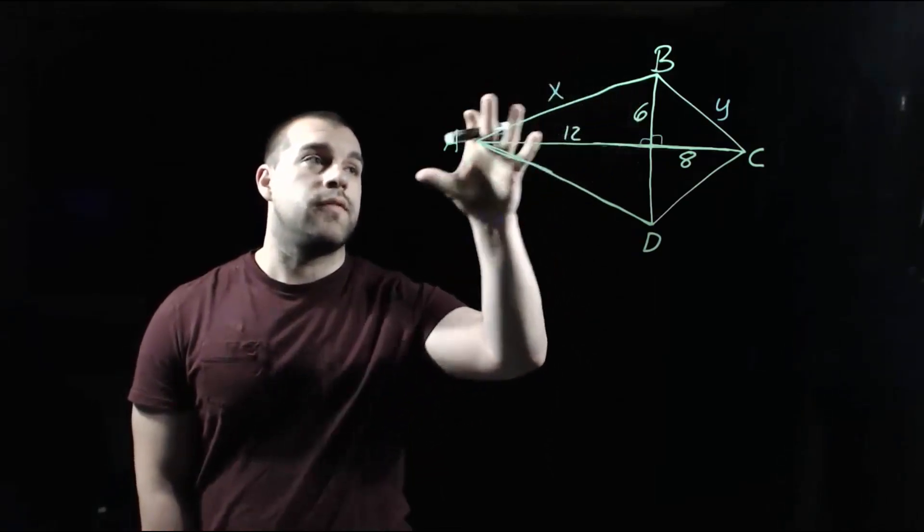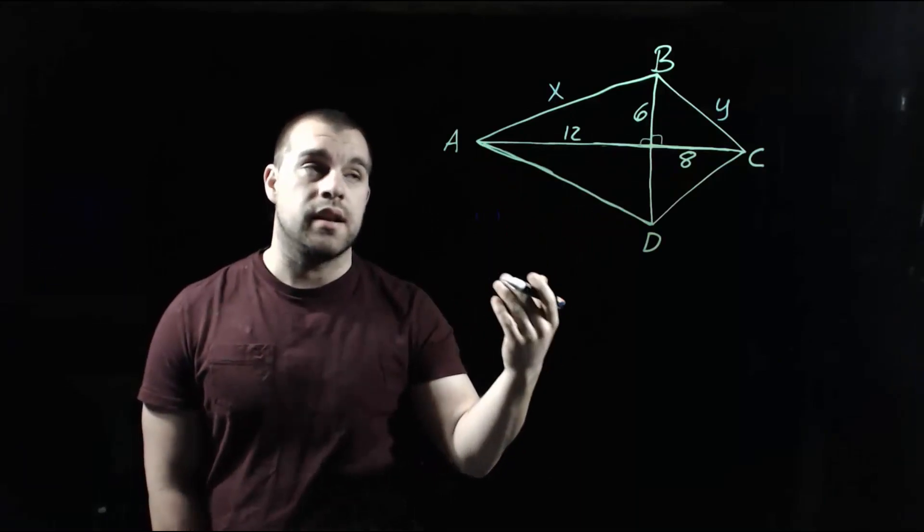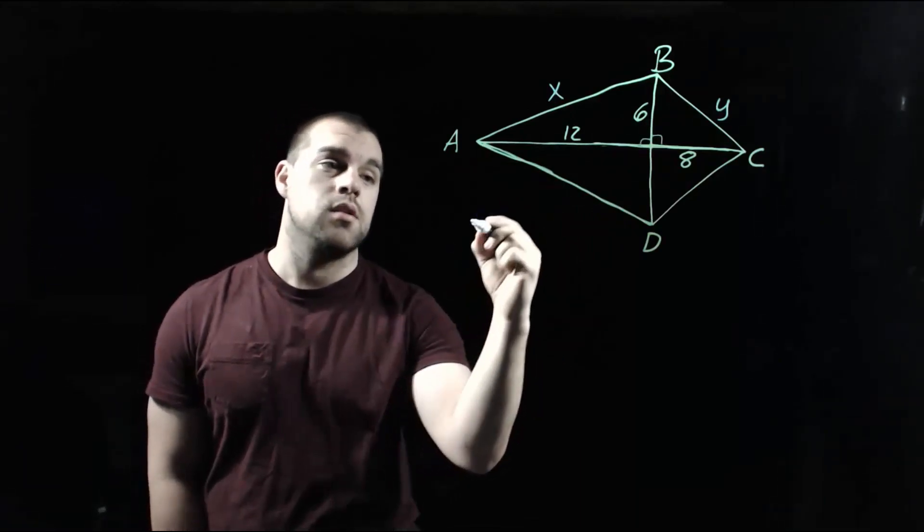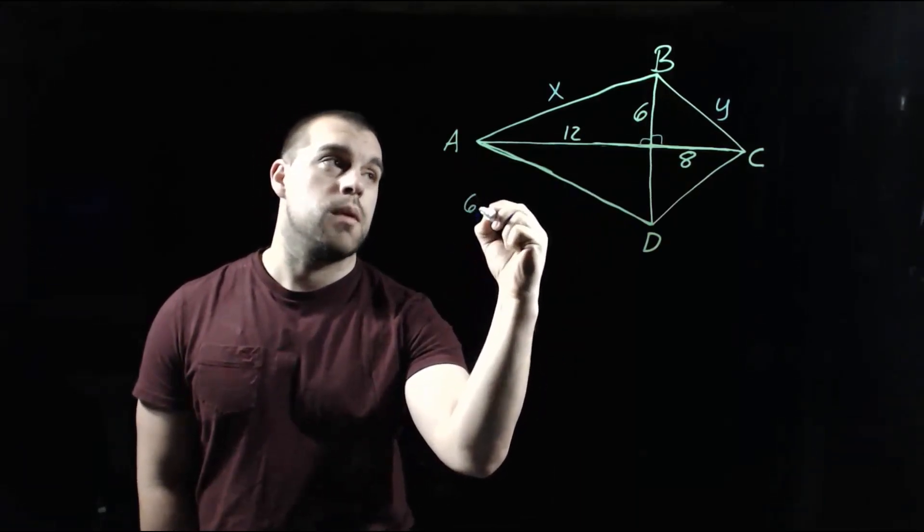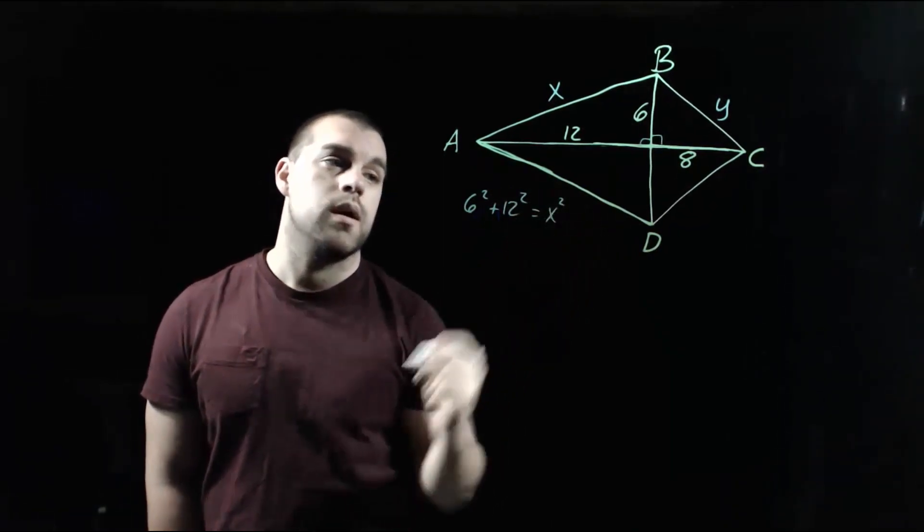So let's start with this one on the left, finding that length from A to B. Since that x is across from our 90-degree angle, that has to be our c value. So I'm going to set this Pythagorean theorem up as 6 squared plus 12 squared equals x squared.